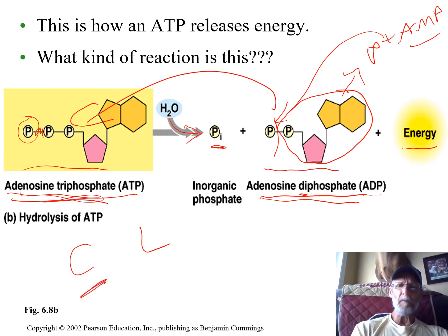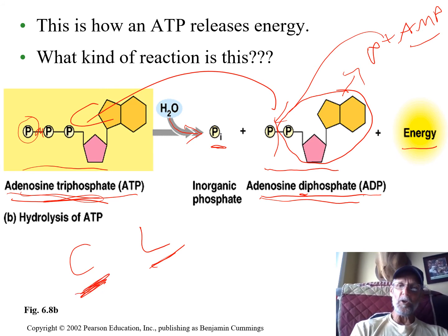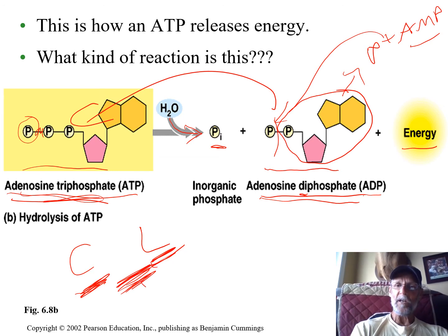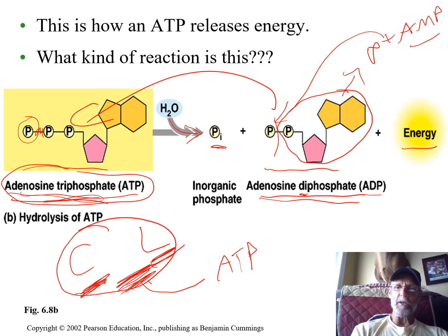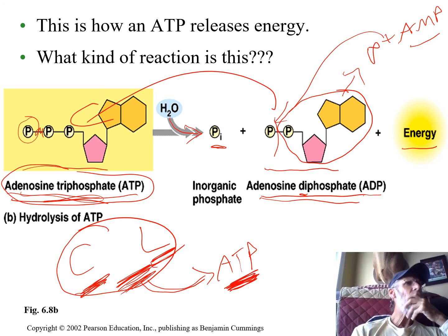Why does your cell need these little batteries? Why not just use carbs and lipids directly if they have energy? It's like the reason your cell phone doesn't use your car battery directly — if you hooked your cell phone up to a car battery, the energy would melt it, literally set it on fire. A carbohydrate like glucose or a lipid is like a car battery — too much energy. But chemistry has evolved so these big car batteries can recharge your little cell phone batteries. ATP is like the little cell phone battery your cell needs to use.